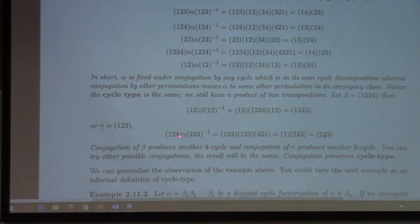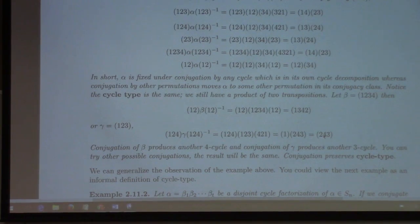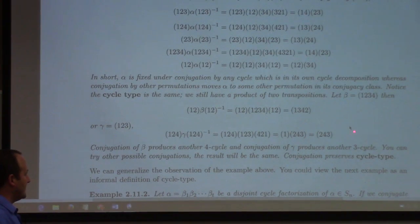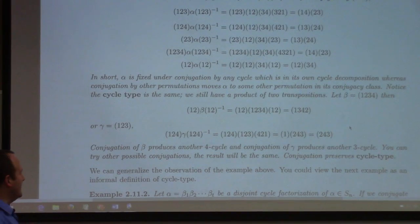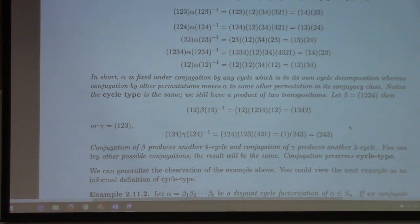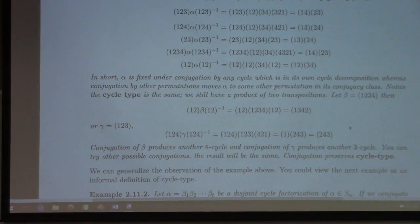Here's a 3-cycle. We can conjugate a 3-cycle gamma by (1,2,4). And again, what will pop back out is (2,4,3). So anyway, the point here is that conjugation preserves cycle type. Put a different way: if you wanted to look at the set of all permutations which were conjugate to one another, how would they be related? They all would have the same cycle type.